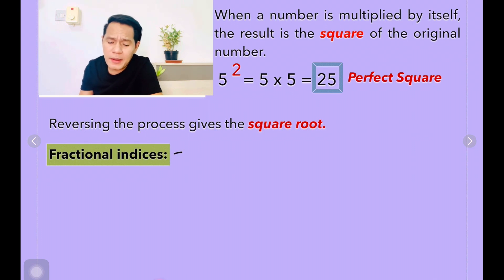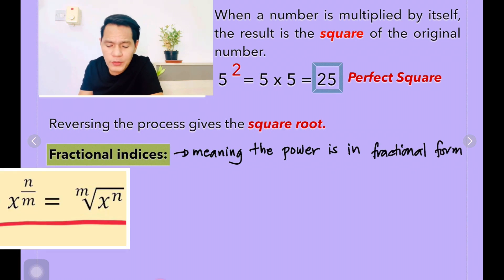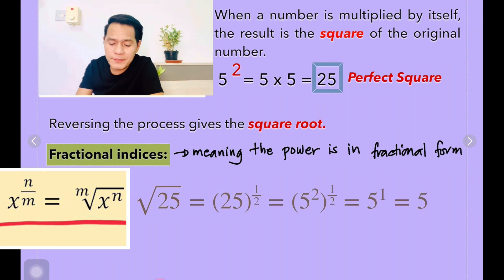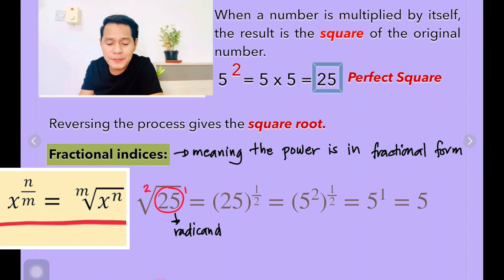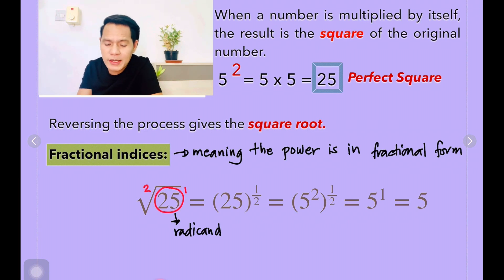What do you mean by that? Meaning it is the power in fractional form. So for example, you have the square root of 25. Here, 25 is the radicand. And how come you have 25 to the power of 1 half? It's because 25 here has the power of 1, and the denominator is 2 because this square root has a 2 there. So that's why you have 1 over 2. It is understood that when there is no number in the radical sign, it is 2. And if there is a 3, then it becomes cube root. So here, 25 to the power of 1 half — that's the meaning of that.